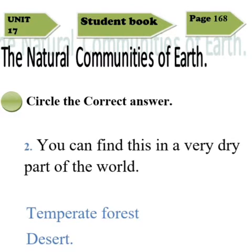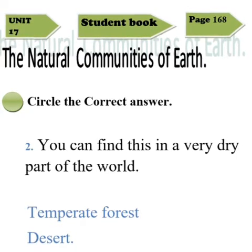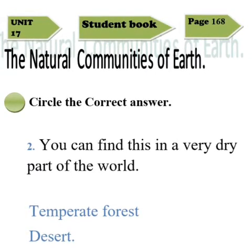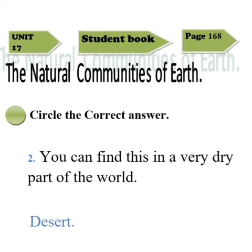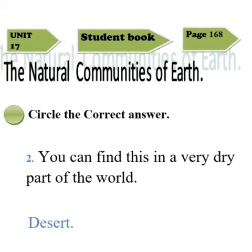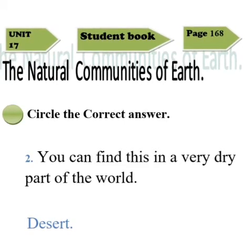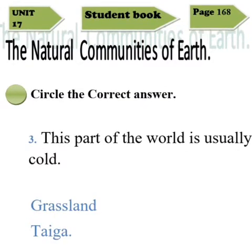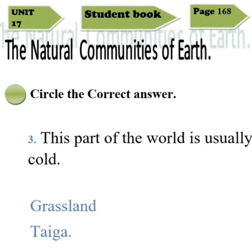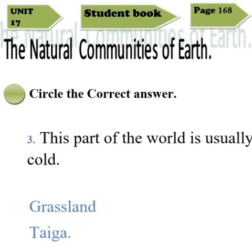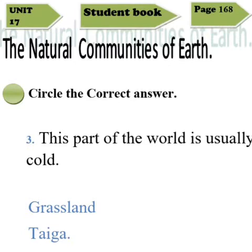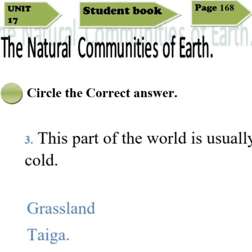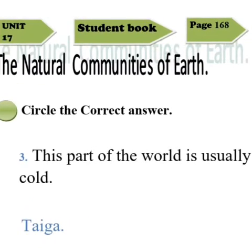Sentence two: you can find this in a very dry part of the world. The given options are temperate forest and desert. Of course it's desert, so circle the option desert. Sentence number three: this part of the world is usually cold, and the options are grassland and taiga. I told you before that taiga and tundra are the coldest parts of the world.